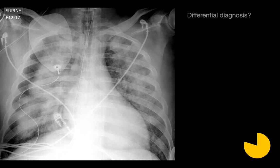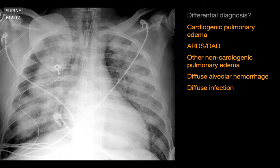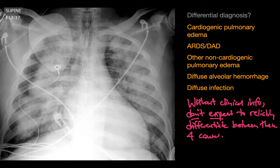What's your differential diagnosis? The lung opacity pattern is a diffuse consolidation pattern. The differential diagnosis for diffuse consolidation includes cardiogenic pulmonary edema, non-cardiogenic pulmonary edema including ARDS and DAD, diffuse alveolar hemorrhage, and diffuse infection. There are few imaging features that permit differentiation between these causes; we need to rely on statistics or knowledge of the patient's clinical setting and presentation.